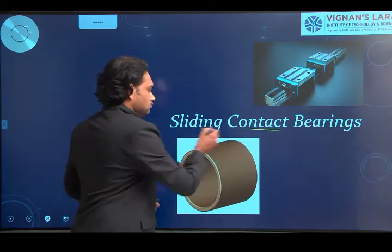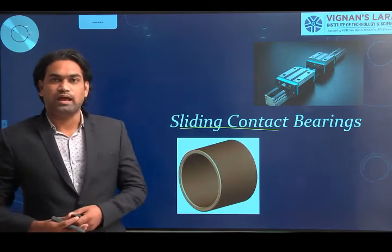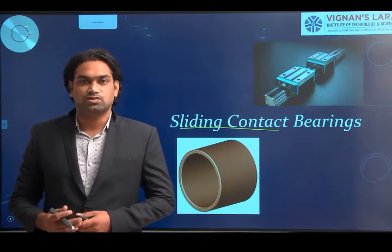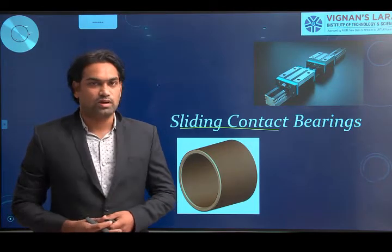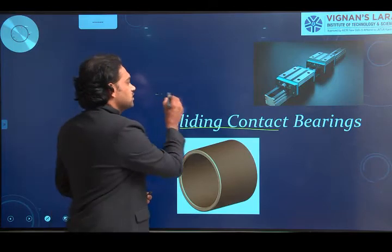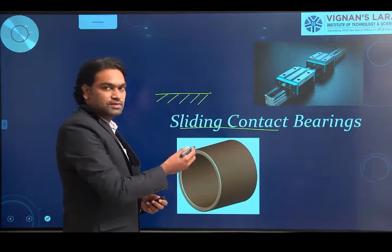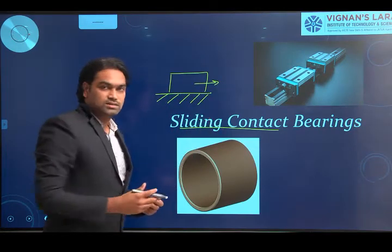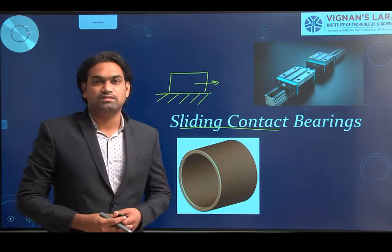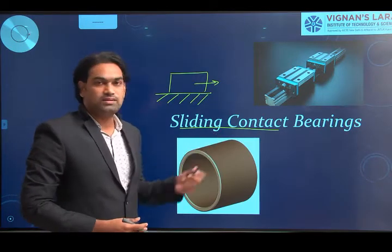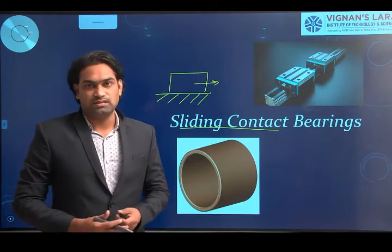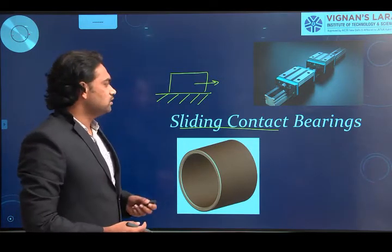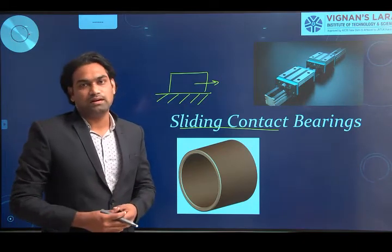As per our syllabus we have two designs of bearings: sliding contact bearings and rolling contact bearings. First we go through the sliding contact bearing. If there is a fixed element — the bearing surface — and another machine component that moves, forming a sliding action between the two surfaces, that kind of bearing we call a sliding contact bearing.